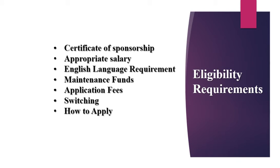Once you submit the application form and documents, the embassy will forward everything to the relevant entry clearance manager or officer, who will make a decision based on your information and documents. If they refuse your application, you can apply for an administrative review — you cannot appeal the decision directly. However, you can challenge the decision by way of judicial review.